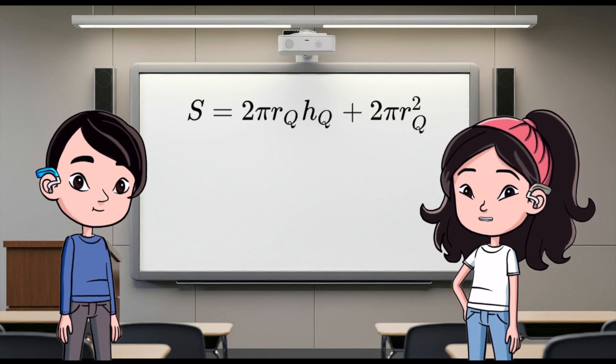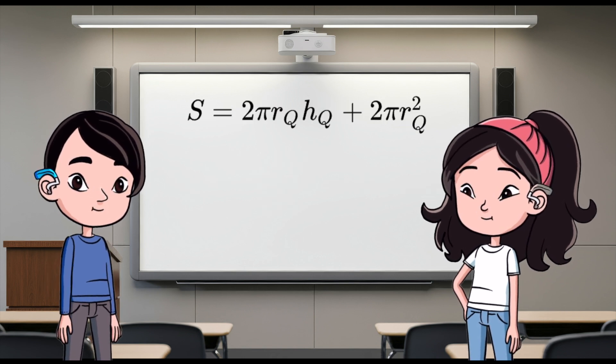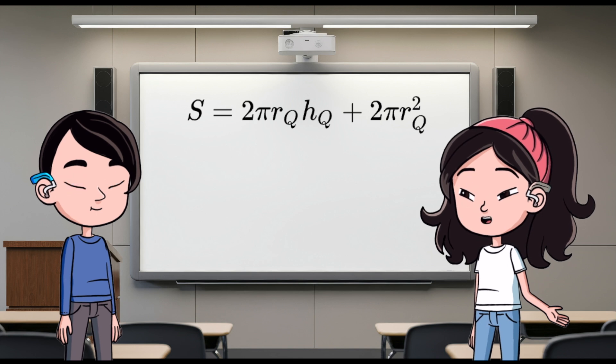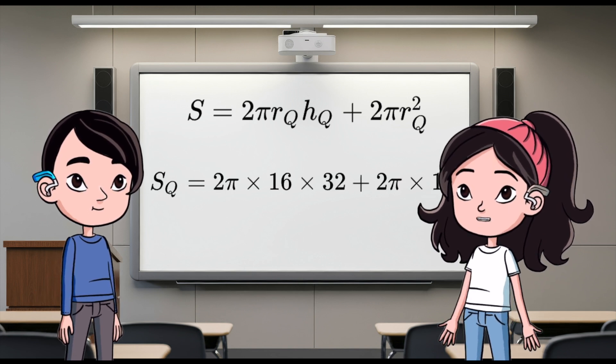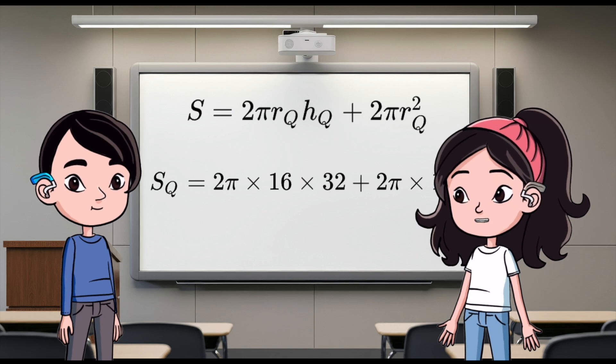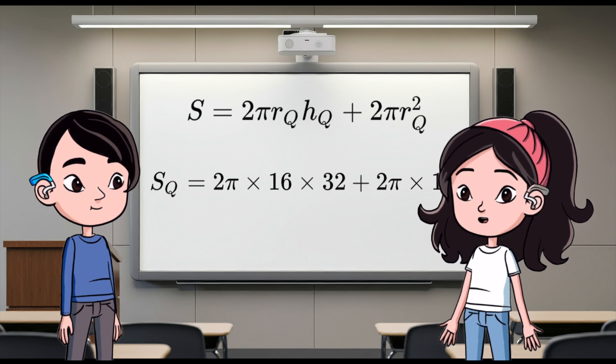Nice. Now, let's find the surface area of cylinder Q using the formula S equals 2πrh plus 2πr². Plug in the values. S sub Q equals 2π times 16 times 32 plus 2π times 16².